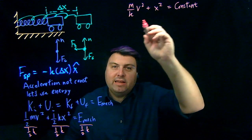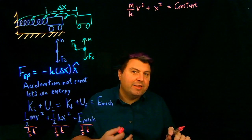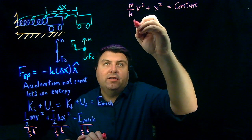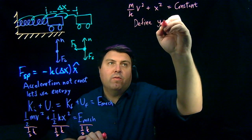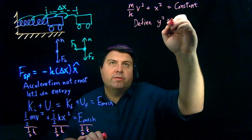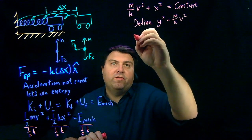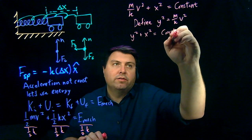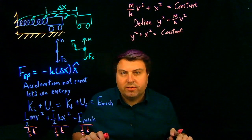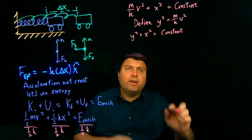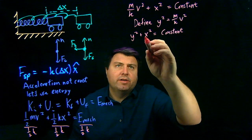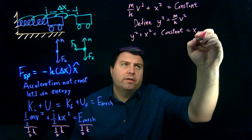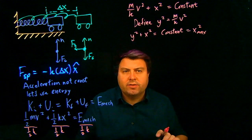Well, we might start seeing something a little bit like this where we have x squared plus something else squared equals a constant. So I'm going to define y squared as equal to m over k v squared. And now we have y squared plus x squared is equal to some constant. If we had it where our velocity was zero, then y would be zero, and it would only be x squared. So this constant is actually x max quantity squared.